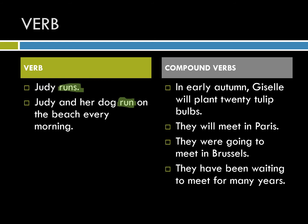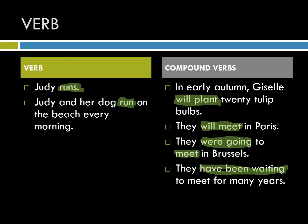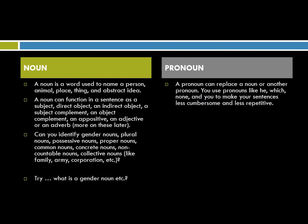If we look on the other side at compound verbs, we're going to see verbs that are a little more complicated. For example, here we have 'will plant,' 'will meet,' 'we're going to meet,' and 'have been waiting.' With these compound verbs, what's happening is our verbs in English also tell us about time — whether it's present, past, or in the future.